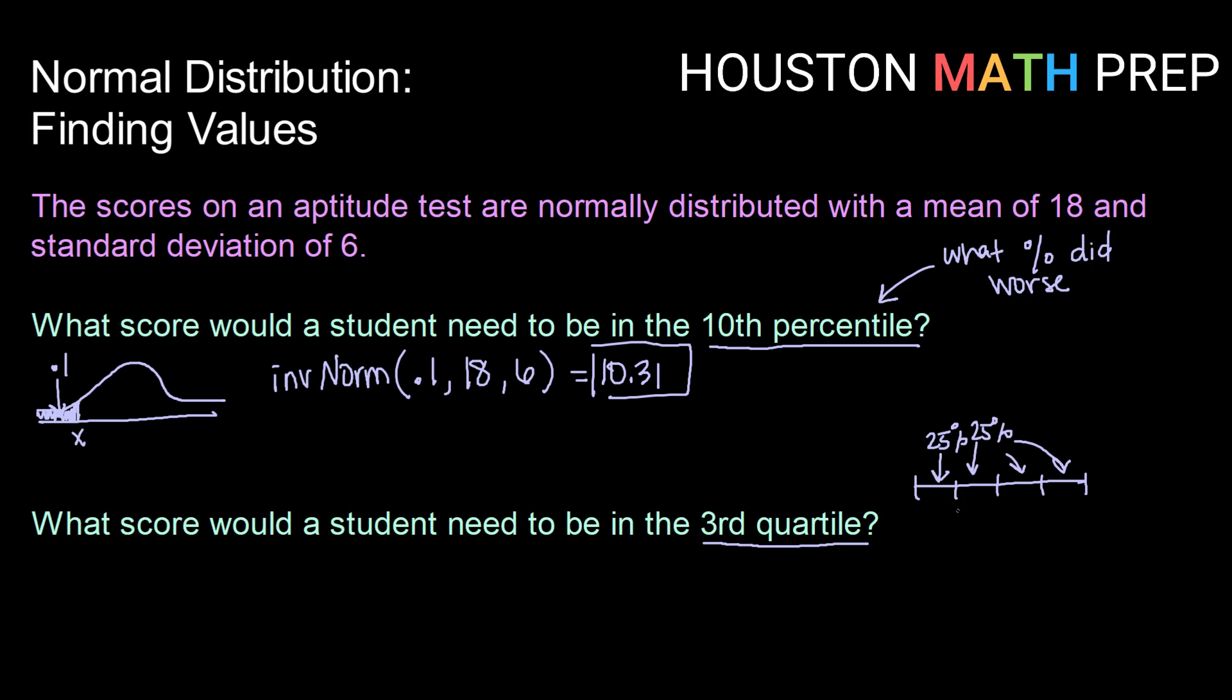So the third quartile is this value here where we have 75% to the left.